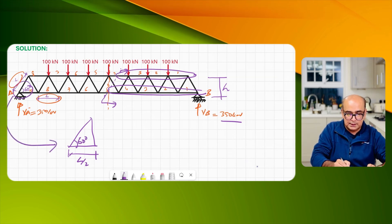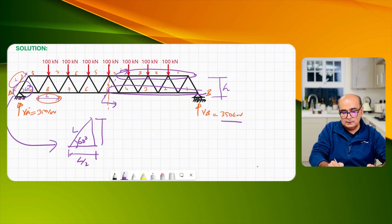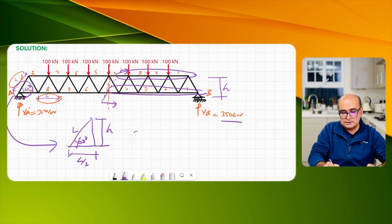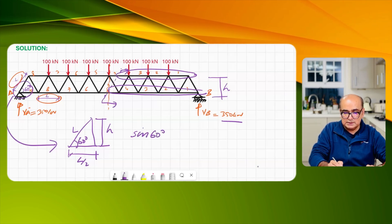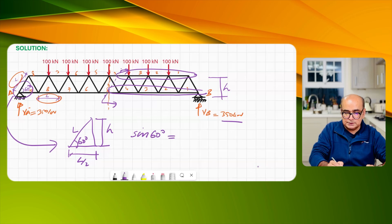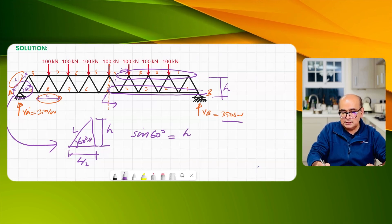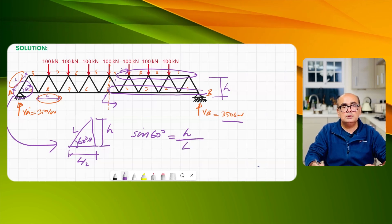The angle is 60, I've taken this information from here, and this is L and here the height is h. So I will simply say sine of 60 degrees, sine means opposite so opposite is h divided by hypotenuse is L, so h over L.